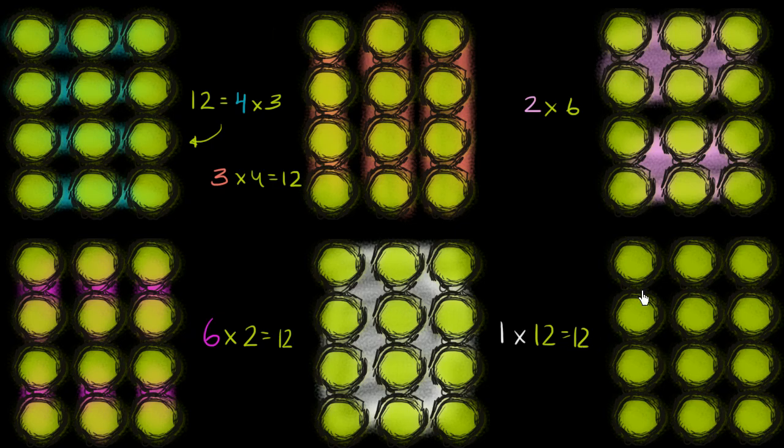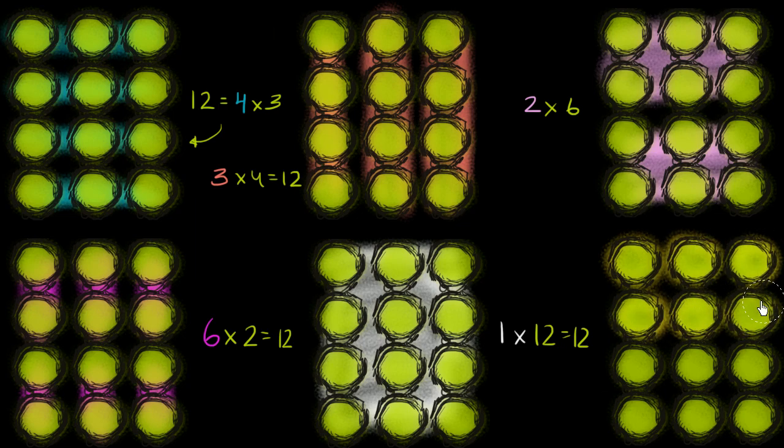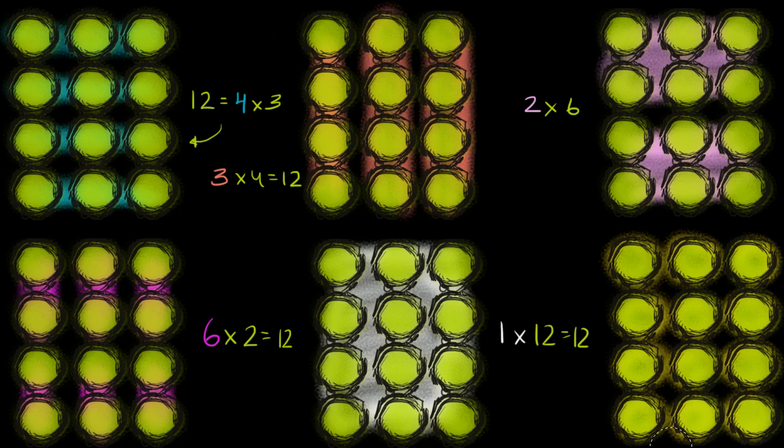And we could think of it the other way around. We could view this as 12 groups of 1. So 12 groups of 1. This is 1 group of 1, 2 groups of 1, 3, 4, 5, 6, 7, 8, 9, 10, 11, and 12. 12 groups of 1. So we could also write 12 groups, and in each one I have 1. Well, that's still going to get me to 12.